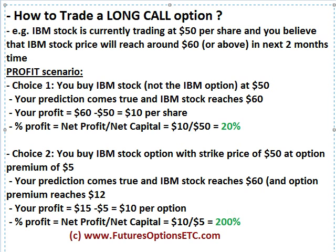Let's say you as an option trader are bullish on IBM stock. Assume that IBM stock is actually trading at $50 per share as of now, and you believe that IBM stock price will reach around $60, $70, or $80 or so in the next 2 months time.